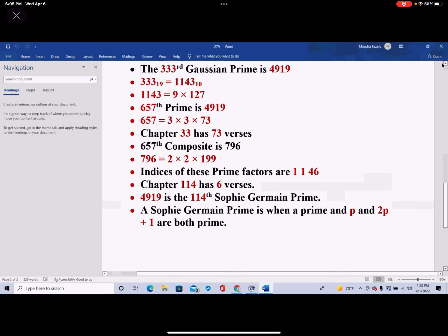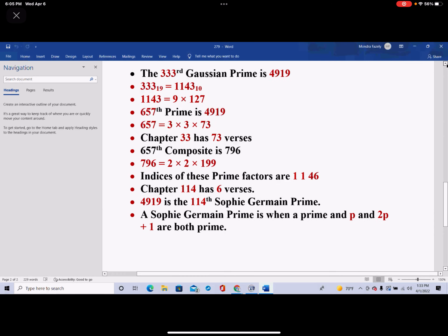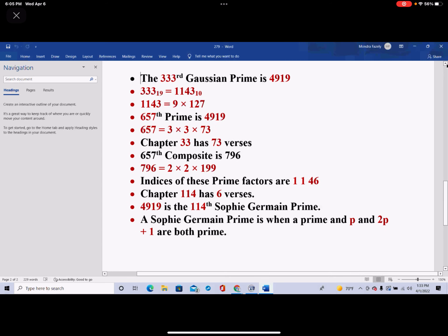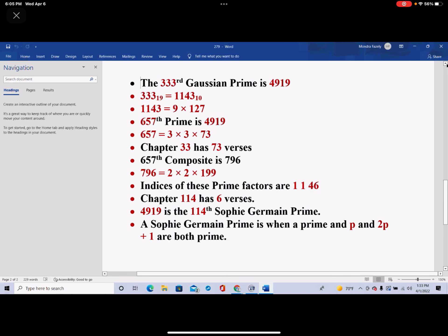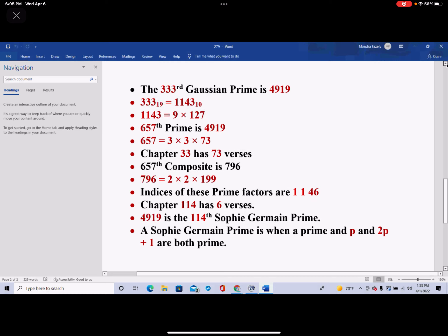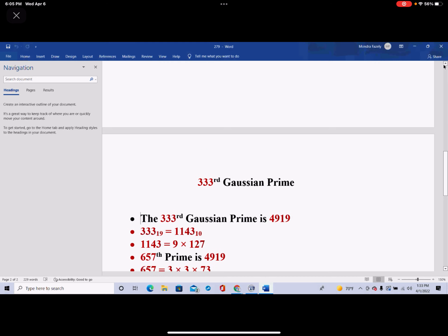Now, what I want to do is I want to share this with you today, and I want to go to 333 Gaussian Prime. 333 Gaussian Prime is 4919.